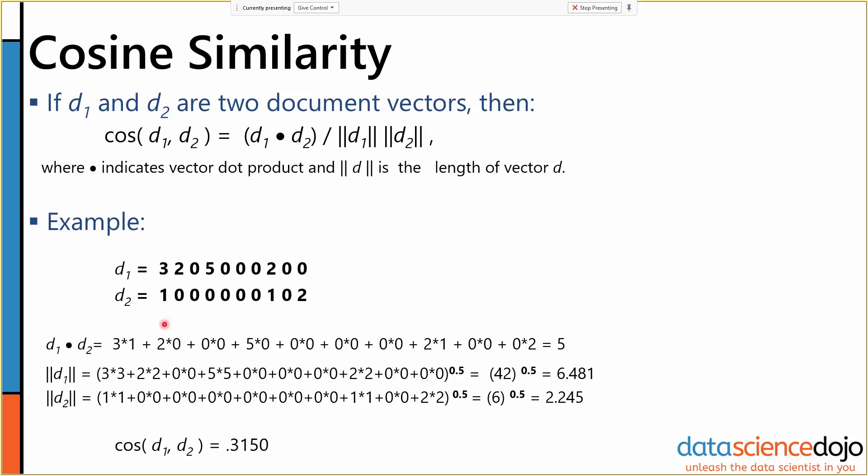So in this case, we have a dot product of 5. We have a d1 and a d2 of 6.481 and 2.245, those are our magnitudes. So we multiply these two together and divide 5 by that, and we end up with a cosine similarity of 0.315.